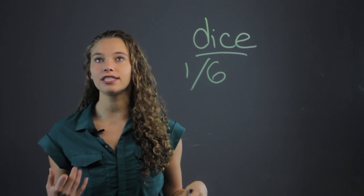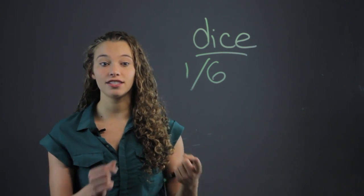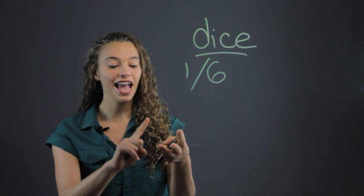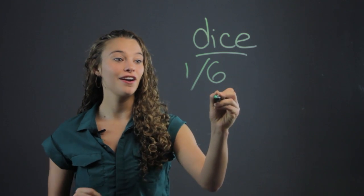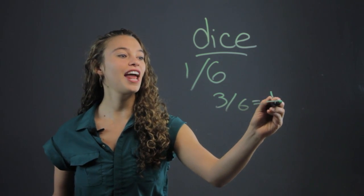You can also say, what's the probability that you will roll an even number? Well, that's two, four, and six, right? That's three over six, which then they have to reduce to one half.